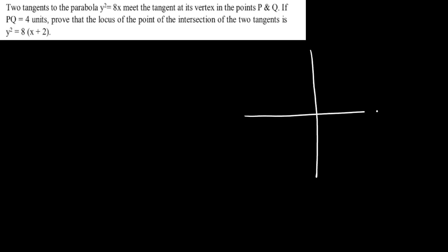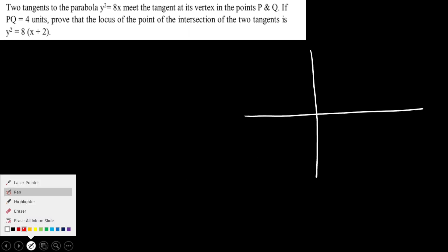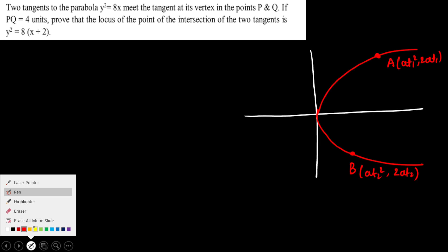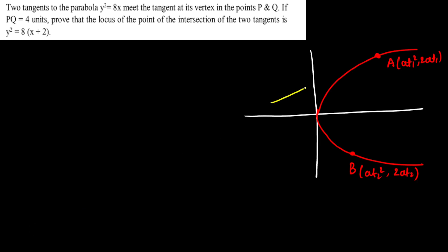I'm going to start with the parabola. Let's say this is our parabola with x and y axes. Since y² = 8x, it opens to the right. Let's say two points — I'll call the first point A with parametric coordinates (at₁², 2at₁), and point B with coordinates (at₂², 2at₂). At these two points, I'm going to draw tangents.